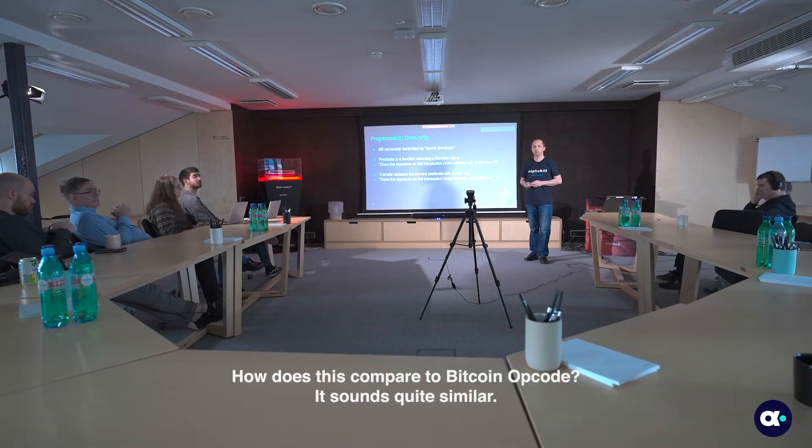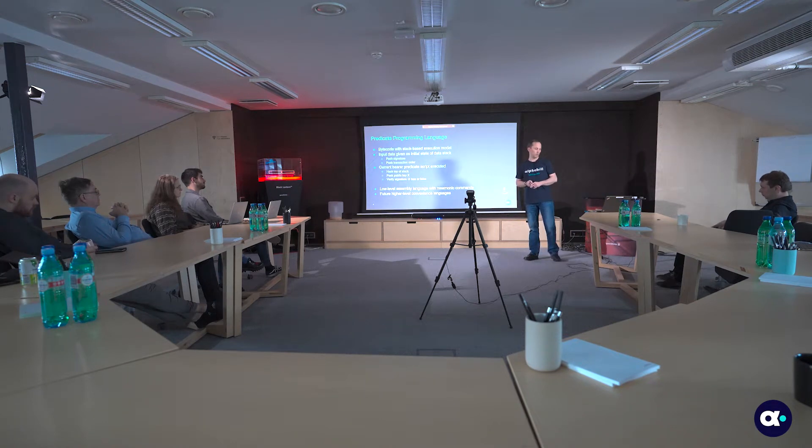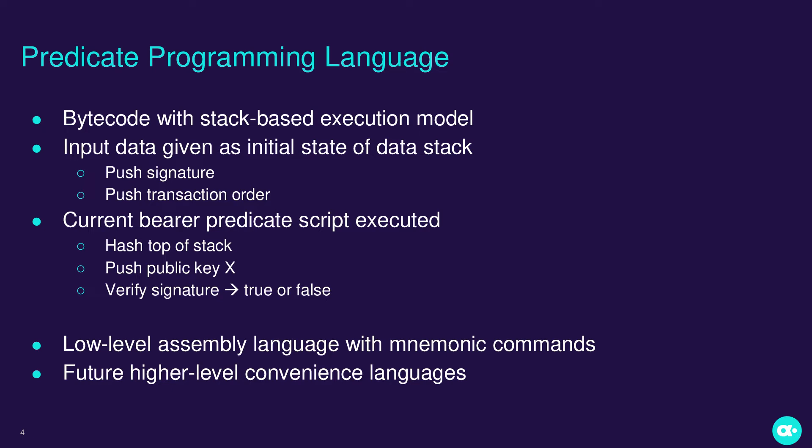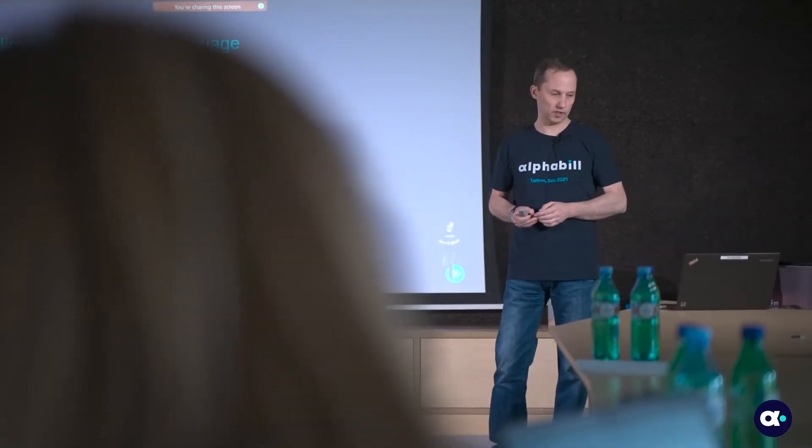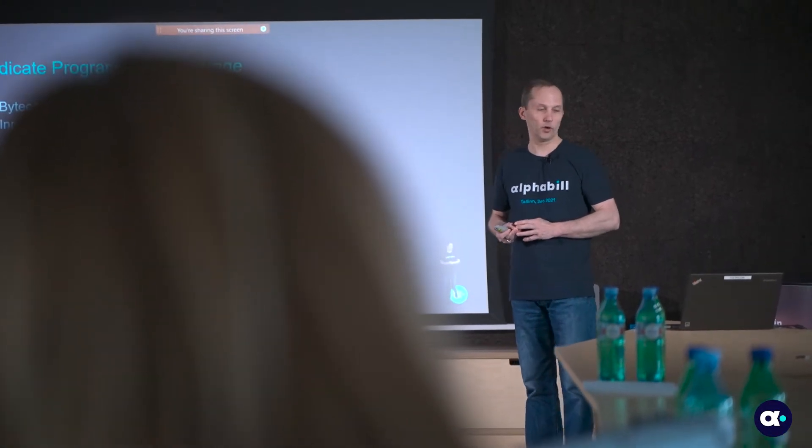Regarding comparison to Bitcoin opcodes — yes, it is actually very similar. Just like in Bitcoin, you can have a simple predicate that only verifies a signature on the transaction order by a public key, but you can also write more complicated scripts. The scripting language of Alphabill has been influenced by bytecode-based virtual machines, of which the Bitcoin virtual machine is an example, and also the JVM. You write source code in a high-level language, it gets compiled into bytecode, and the script gets executed on a stack-based virtual machine.